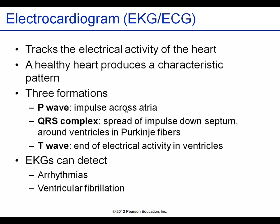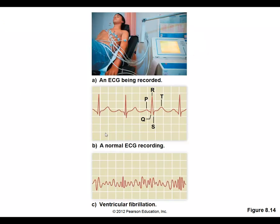Remember: P wave = atrial depolarization; QRS complex = ventricular depolarization and contraction; T wave = ventricular relaxation. Abnormalities on ECG include ventricular fibrillation, atrial flutter, arrhythmia, and ectopic beats — all diagnosable by putting a person on ECG or EKG.